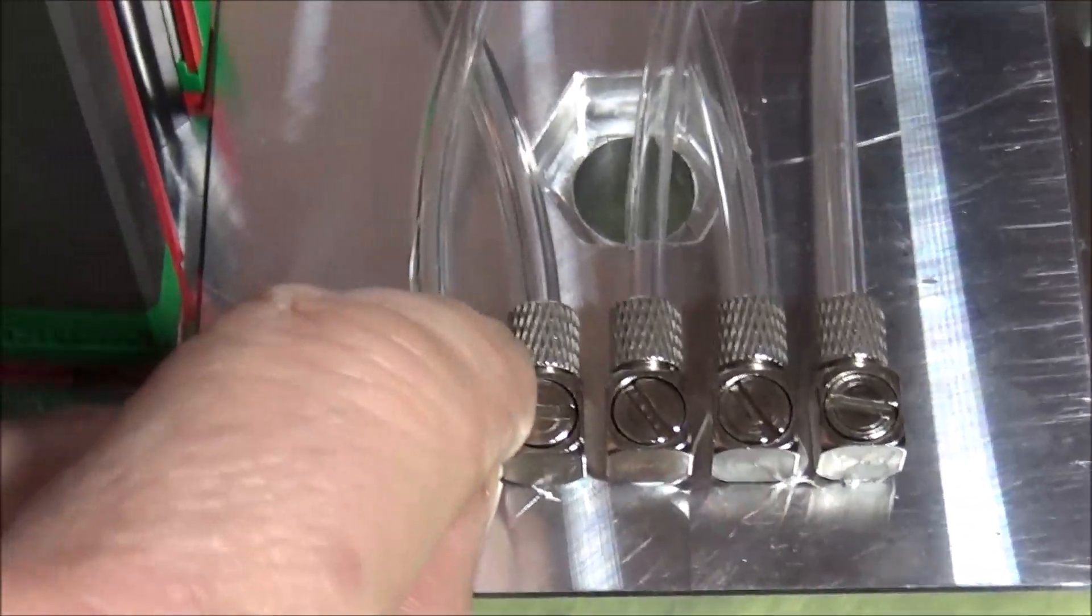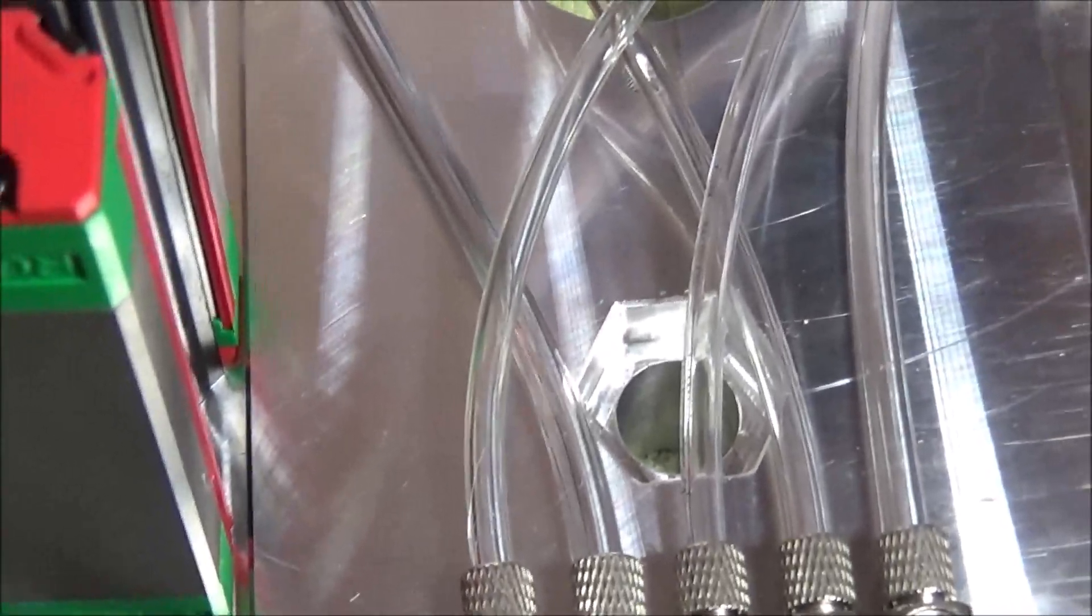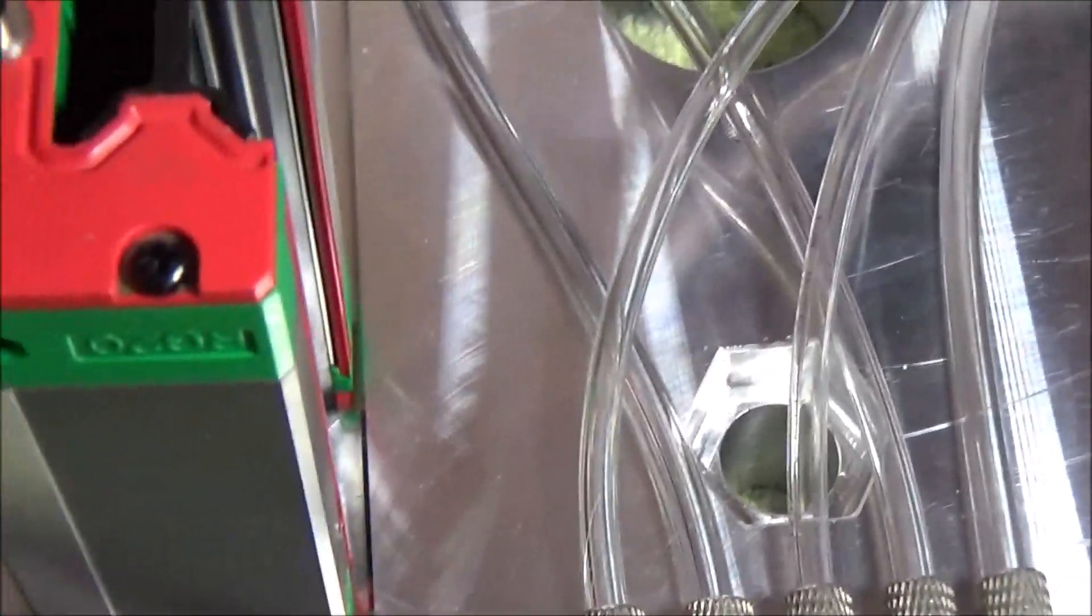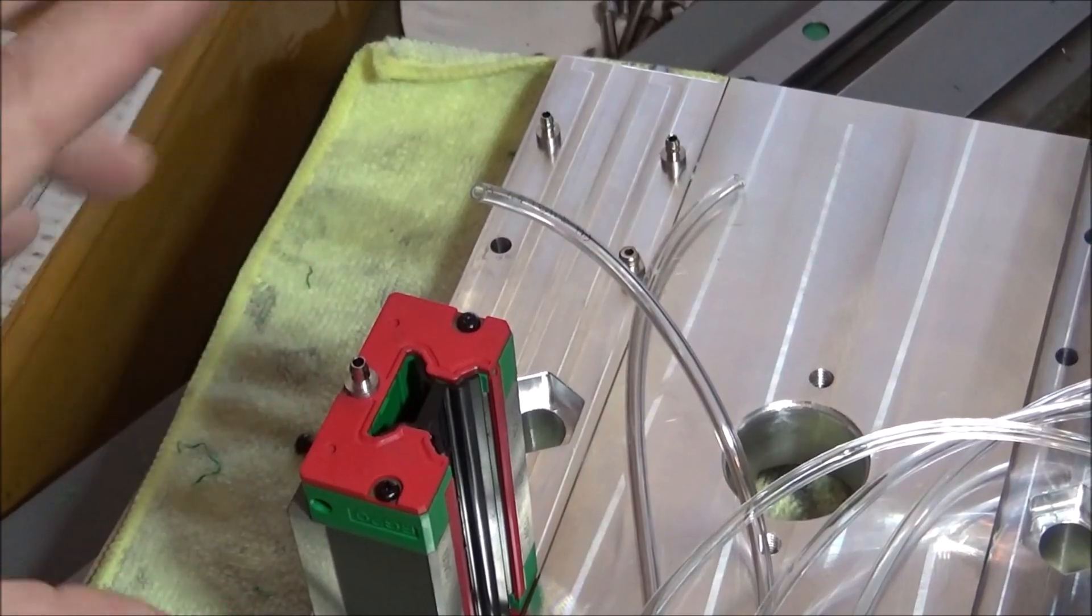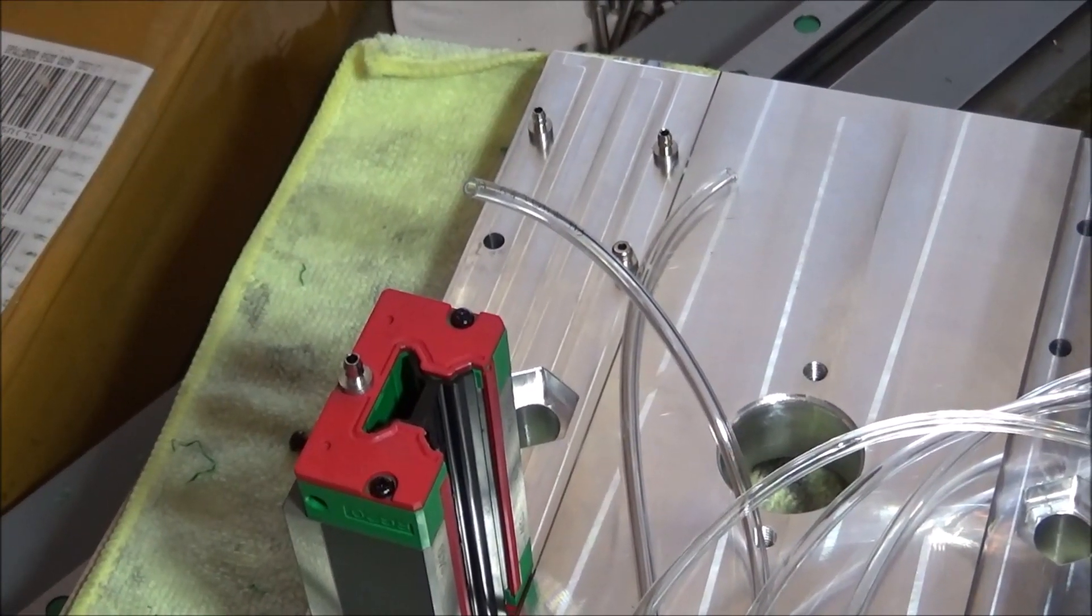And these fittings, I could have used these banjo type fittings, but they're just really big and I didn't want them getting in the way and causing any troubles. I thought this would be a little bit easier. All right, so I'm going to finish up the other two linear blocks and we'll be ready to start assembling.